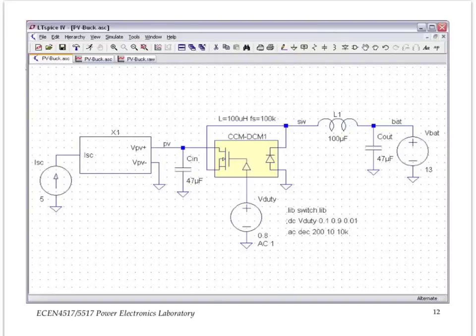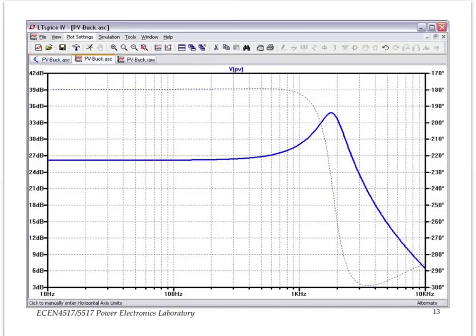So, for example, we can look for the frequency response from duty cycle perturbation to perturbation in the voltage at the output of the PV panel, and we do that with 200 points per decade from frequency of 10 hertz to 10 kilohertz, just as an example. The result is shown right here.